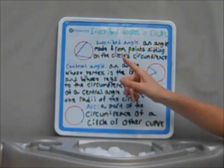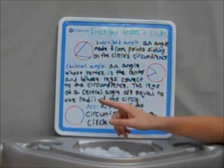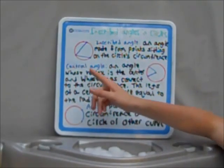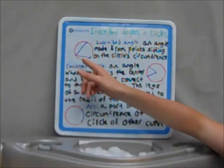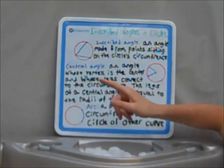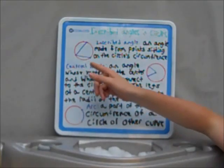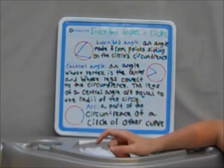An inscribed angle is just an angle made from points sitting on the circle's circumference, as shown here. Point 1, point 2, point 3, all connected by segments, and all three points lie on the circle's circumference.